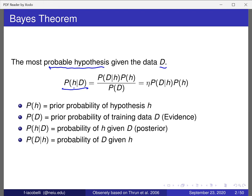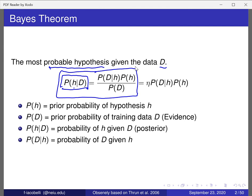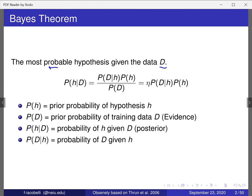Now all these probabilities have names. The left-hand side — P(H|D) — is called the posterior probability. The term P(D|H) times P(H) in the numerator is called the likelihood. And P(D), the probability of observing the data we have, is called the probability of the evidence.